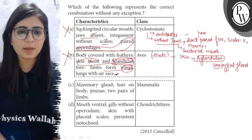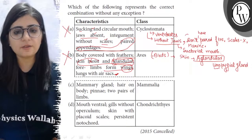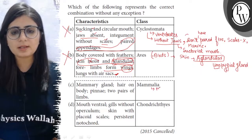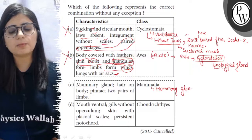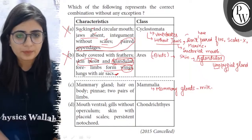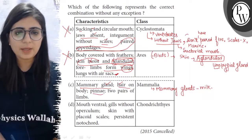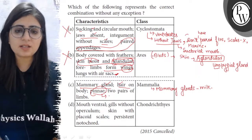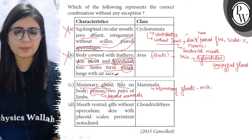Moving further: mammary glands, hair on body, pinnae, two pairs of limbs — these are stated as features of class Mammalia. In mammals, the animals with mammary glands produce milk for the nourishment of their young ones. The body of mammals is covered with hair. However, pinnae are absent in aquatic mammals — so aquatic mammals do not have pinnae. Therefore this statement is wrong with respect to mammals.